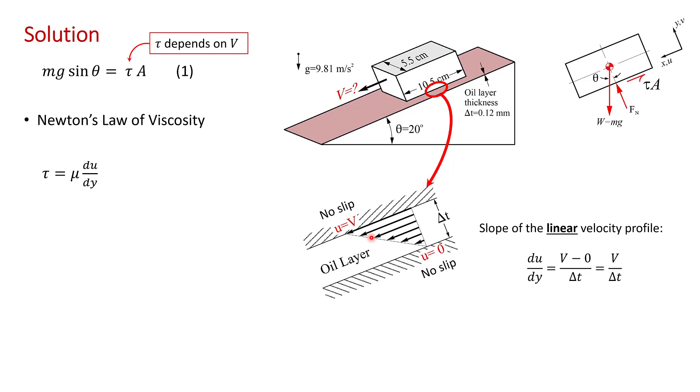You're told in the problem statement to assume a linear velocity profile. We'll actually prove this later in the course in chapter four. So you have a velocity going from zero to a velocity V in the X direction over a distance delta t. So for a linear velocity profile, it's very easy to calculate the velocity gradient du dy is just going from V at the surface of the block to zero at the surface of the plane over a distance delta t. So our velocity gradient is just V over delta t.